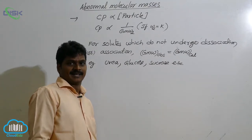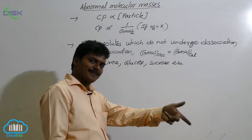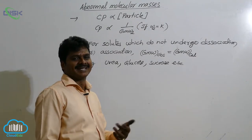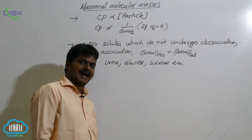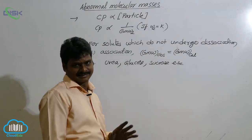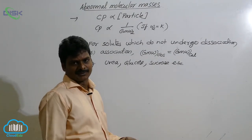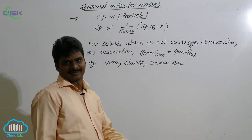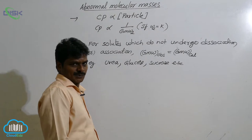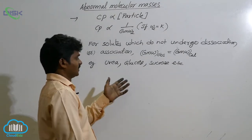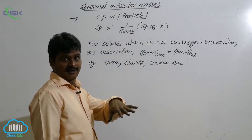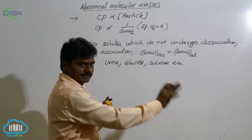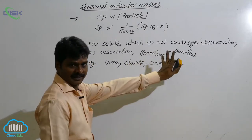In dissociation, particle number increases — for example, NaCl dissociates to Na⁺ and Cl⁻. In association, particle number decreases — for example, benzoic acid in benzene undergoes dimerization. For substances that undergo dissociation or association, the molecular weights from experiment and from formula are not the same. But for urea, glucose, and sucrose, the observed and calculated values are the same.